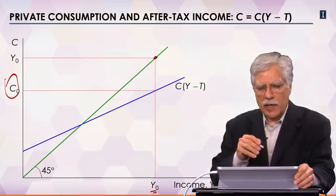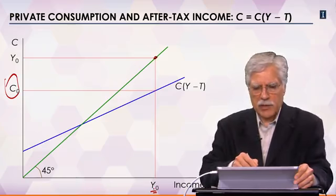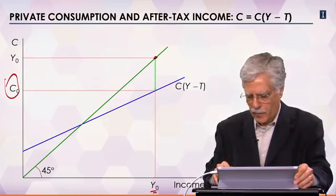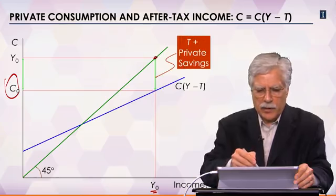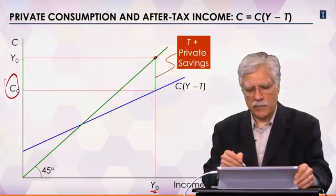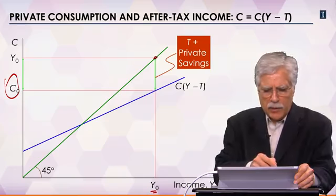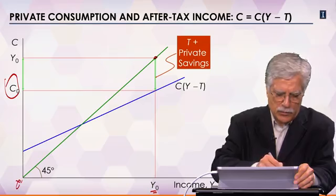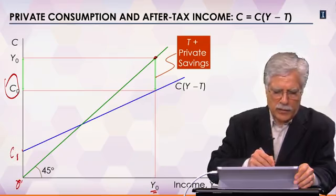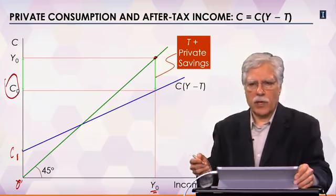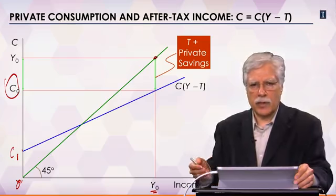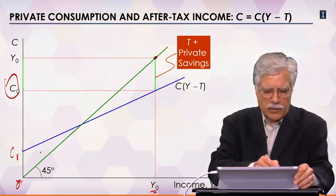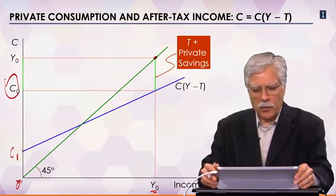If income is y0, consumption is y0 on the 45-degree line. But that's not what people actually do. Normally, if income is y0, people save some of it and also pay taxes, so consumption is less than the amount earned. The difference between income and consumption is taxes plus private savings. However, at low levels of income, expenditure could be bigger than the income level — especially if income is zero, consumption will still be positive, because you still need to survive. You either borrow or use past savings. At some point, consumption equals income, but normally consumption is less than income.